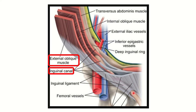Here we can see the inguinal canal. It starts from the superficial inguinal ring here and the deep inguinal ring here. So from the outside going inward, if we want to enter the inguinal canal, we have to cut this structure. In this picture, we can see this structure is derived from the external oblique muscle, which is one of the abdominal muscles.